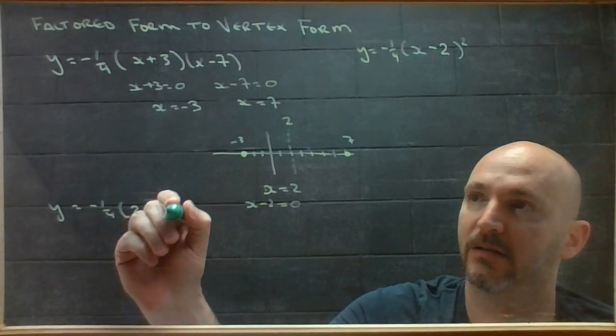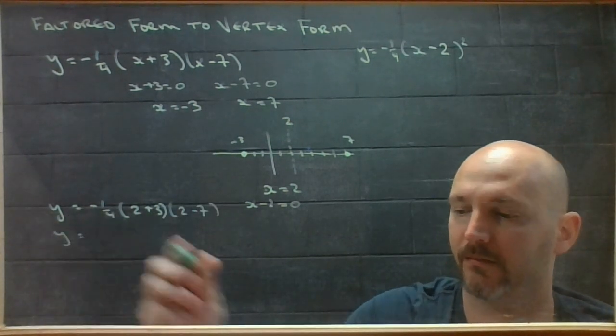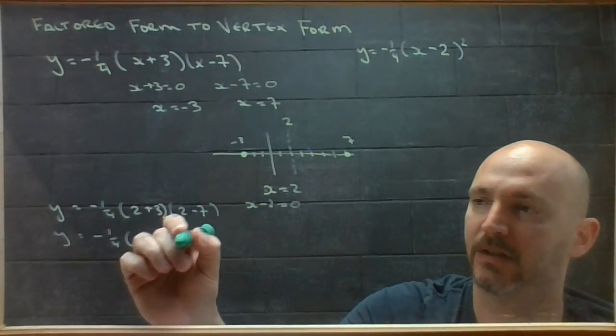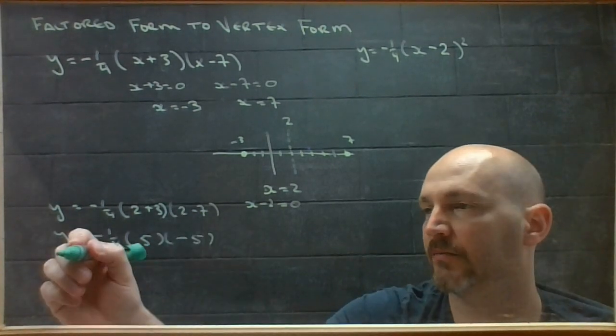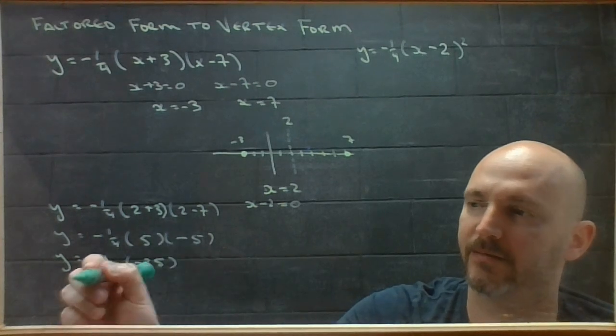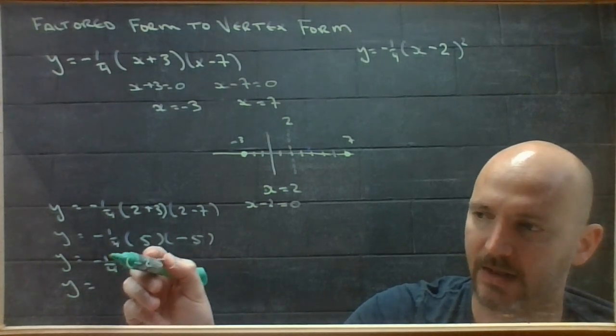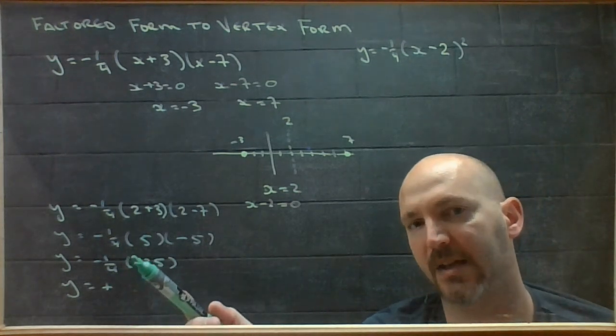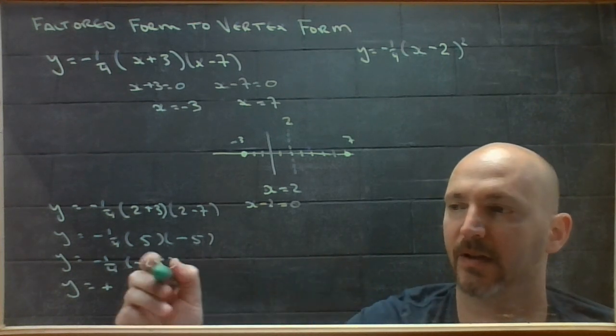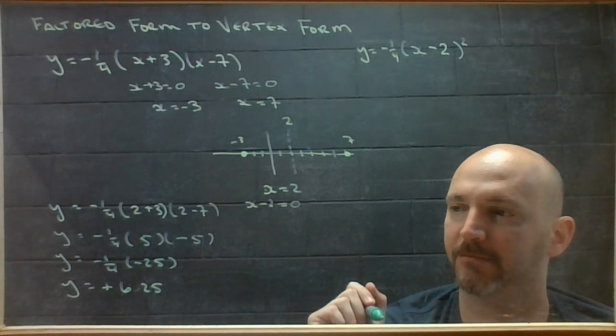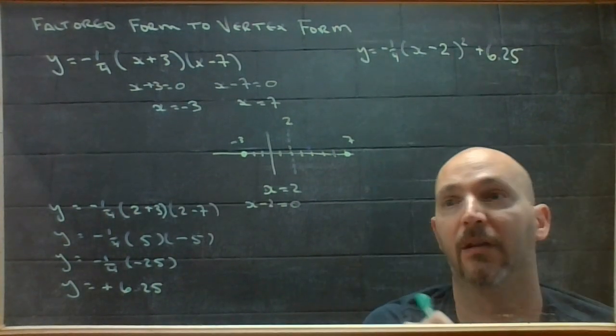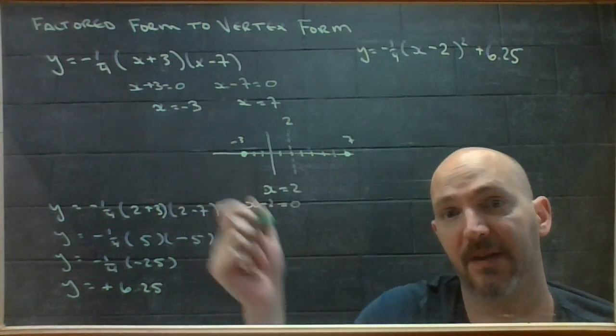2 plus 3, 2 minus 7. Negative 1 quarter. 2 plus 3 is 5. 2 subtract 7 is negative 5. 5 times negative 5 is negative 25. A negative times a negative is a positive. And this is just asking you to do 1 times 25 divided by 4. So, if you work that out, you end up with 6.25. So, 6.25 goes back here. And I've built the vertex form of this particular equation.